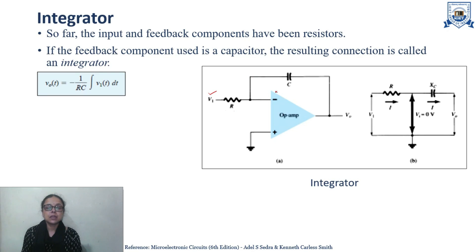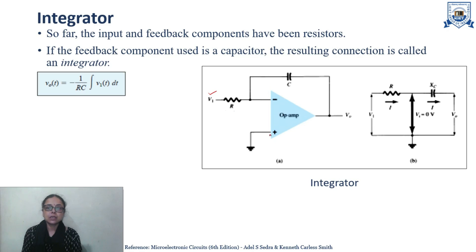As we have seen, we have a feedback resistor, but in case of the integrator, instead of a resistor we are having the feedback capacitor. Here we take the output and the non-inverting terminal of the op-amp is at ground potential.